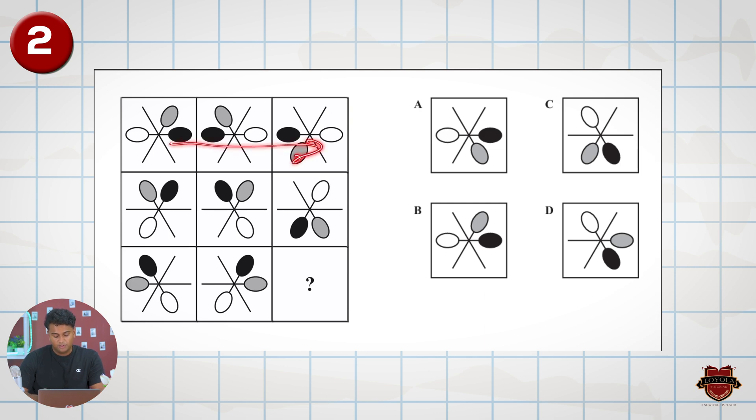Looking across, let's see if there is a pattern that makes sense. If I follow the black pattern or the black color it goes plus three plus zero.